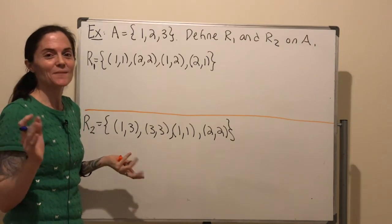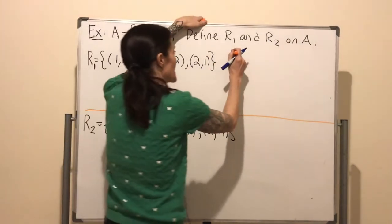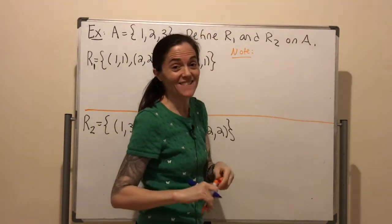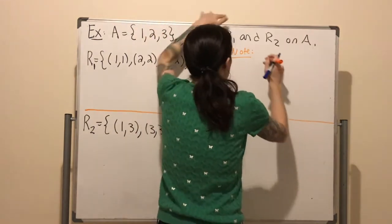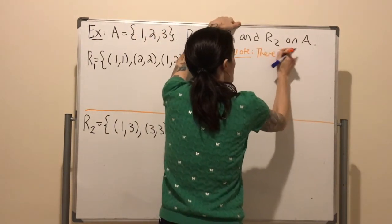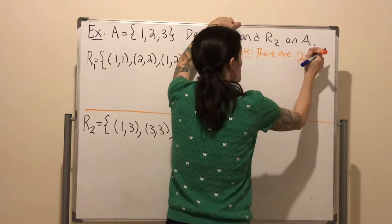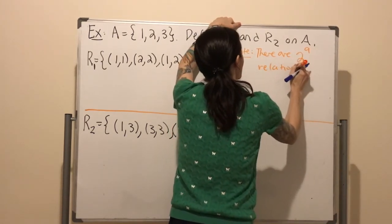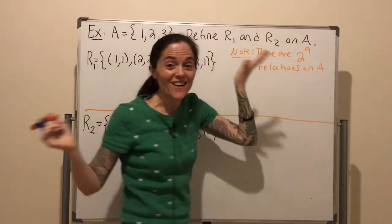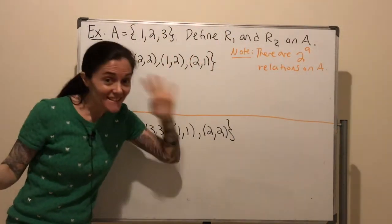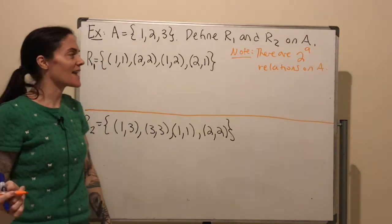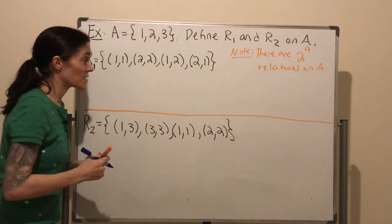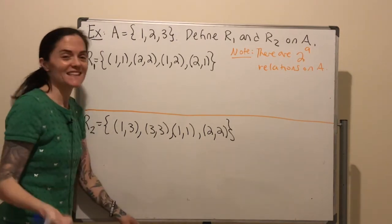A has three elements. This connects to what we did in part one of this lesson: A has three elements, so altogether there are 2 to the 3 squared, which is 2 to the 9, relations on A. This is a really large number, and I certainly am not going to list all of them, but we will work with these two specific ones and figure out if they are reflexive, symmetric, and transitive.